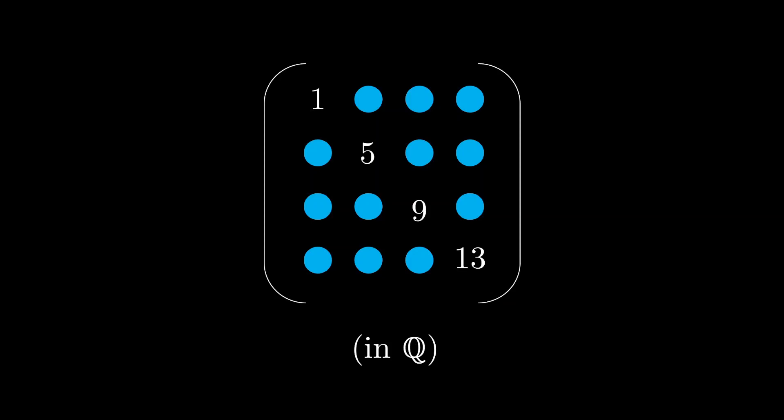Suppose you are given a 4x4 matrix with entries in the rational numbers, and the main diagonal is 1, 5, 9, and 13.